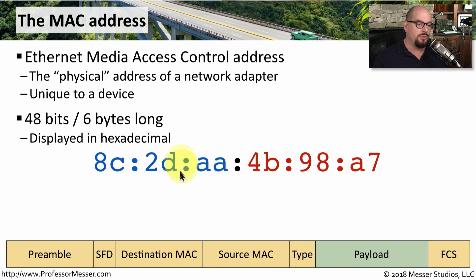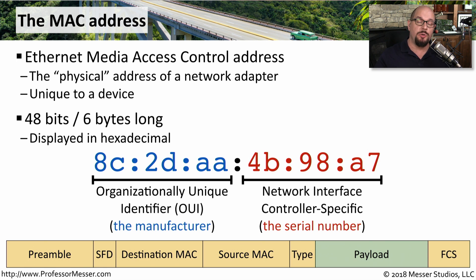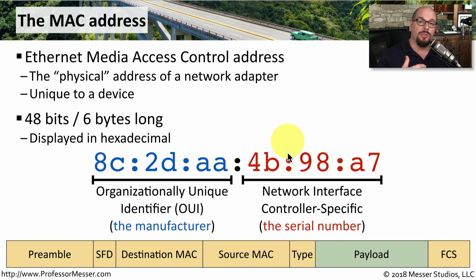We usually put some type of delimiter — colons or dashes — between hexadecimal values so it's easier to read. The MAC address is separated into two pieces: the first half is the OUI, or Organizationally Unique Identifier, which is associated with the manufacturer of the ethernet adapter. That means we can look at the first three bytes of a MAC address and determine who manufactured that adapter. The last three bytes are associated with that individual card — essentially the serial number — and together those six bytes guarantee a globally unique address.